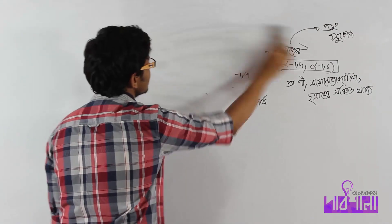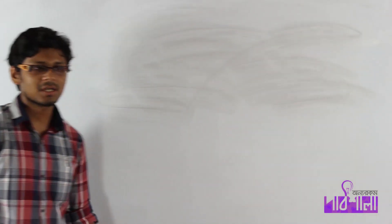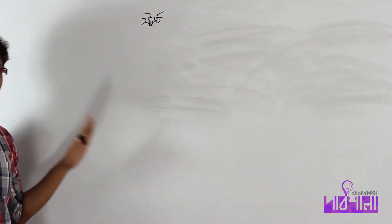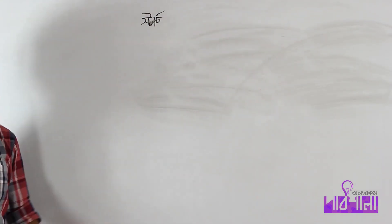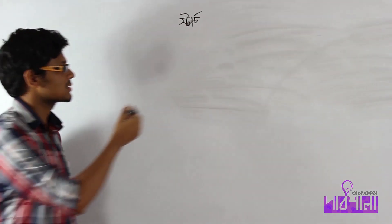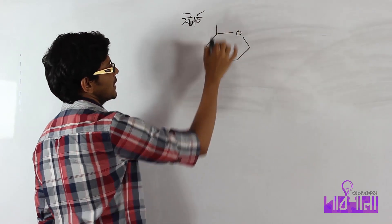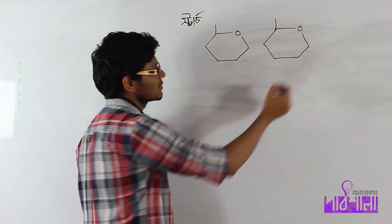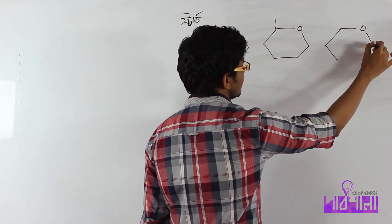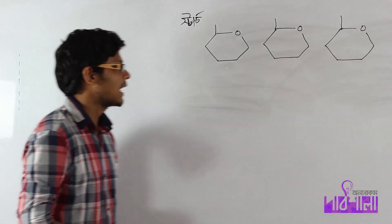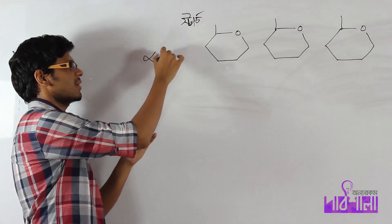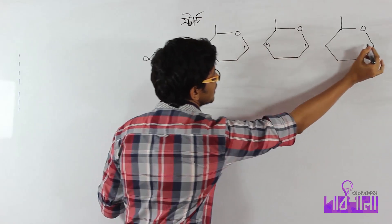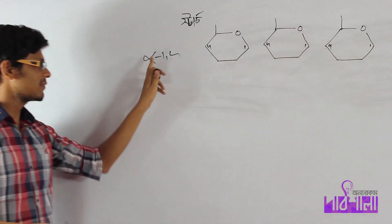The other structure is also important — starch and cellulose. Let's use a shortcut representation with glucose. With amylose, it was alpha-1,4: carbon number 1 connects to carbon number 4 of the next glucose.